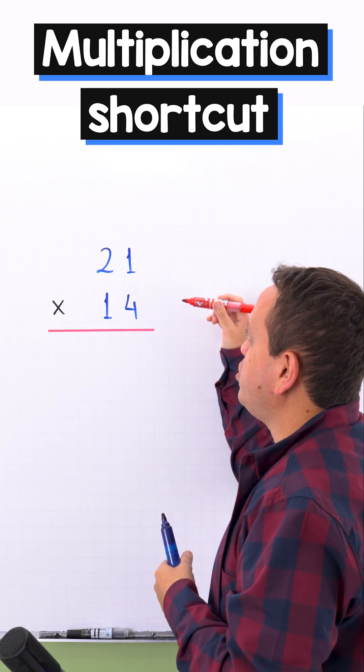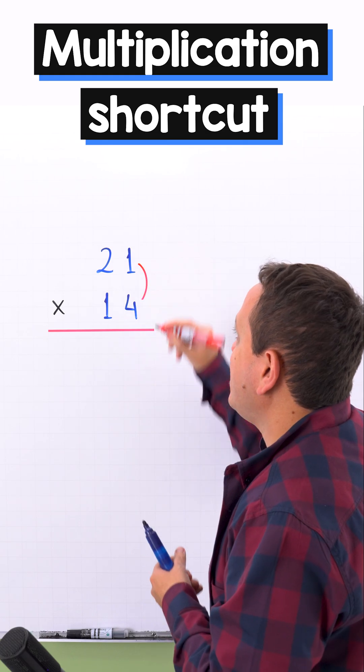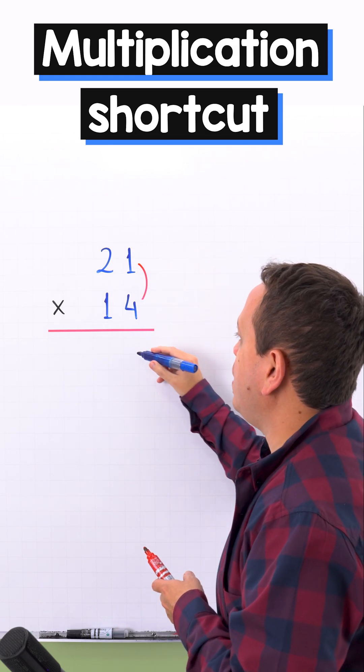In the first example we need to multiply 21 times 14. First we multiply the digits on the right side and 1 times 4 give us 4.